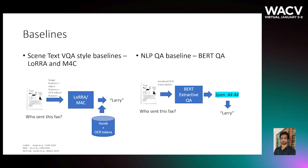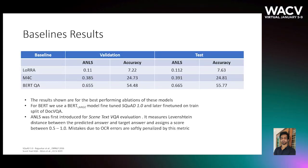Results shown here are for the best performing ablations of these three baseline models. The BERT model developed for reading comprehension works the best. It suggests that text serialization and later applying a reading comprehension model works for at least 50% of the questions. The BERT model used here is a BERT large model fine-tuned on SQuAD and later fine-tuned on DocVQA. The evaluation metric ANLS was first introduced for evaluation of scene text VQA, and it essentially measures edit distance between the target and the predicted answers.